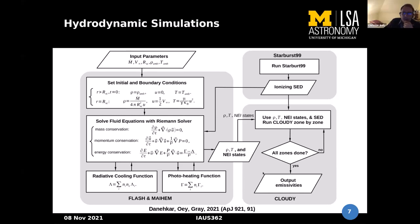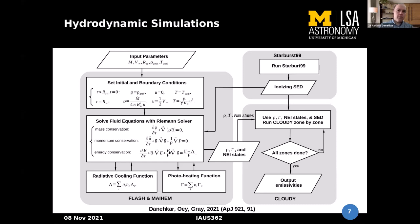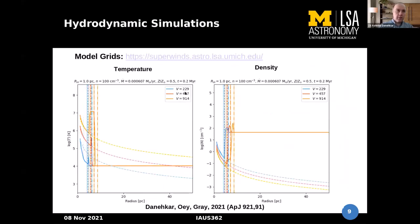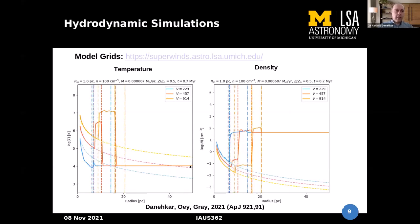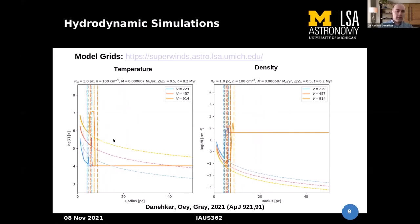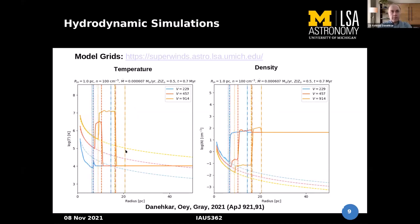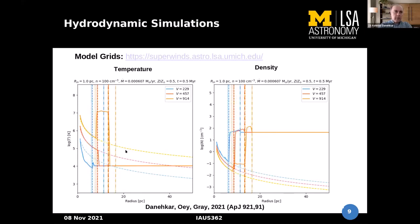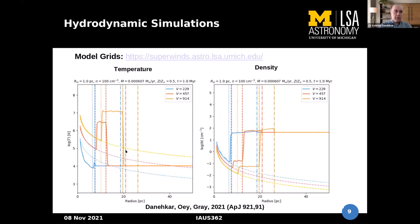Another question asked about the temperature profiles that emerge as a function of radius for superwinds. The initial condition has a constant ambient temperature of 10^4 K, but after running the hydrodynamic simulation, FLASH calculates the resulting temperature profile. This final temperature profile is then used in the photo-ionization calculation with CLOUDY.